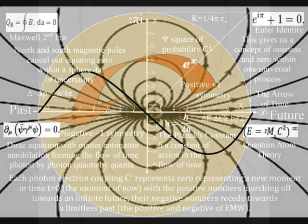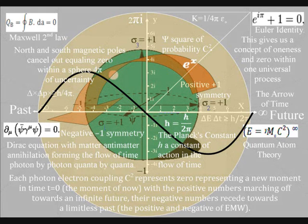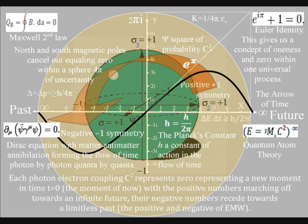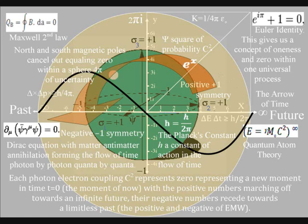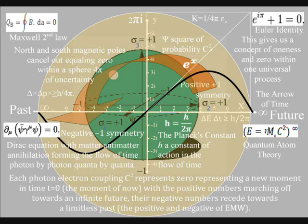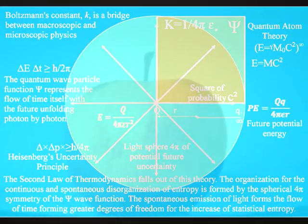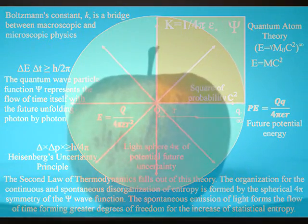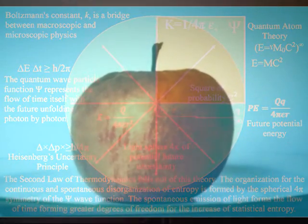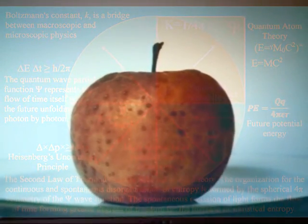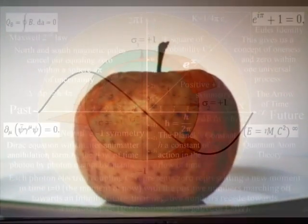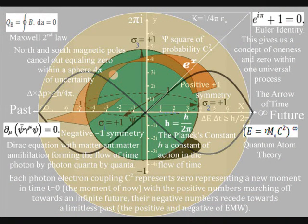On the lower left hand side of the diagram we have Dirac's equation, which also equals zero, representing zero time, with matter-antimatter annihilation forming a magnetic moment or dipole moment, with a future coming into existence photon by photon, quantum by quantum. This magnetic moment is formed when light waves interact with matter to form a photon-electron coupling, and the electron is the most spherical object in the universe. This spherical symmetry forms the low entropy that creates the possibility for the continuous increase in entropy — or disorganization — that we have in the second law of thermodynamics as time unfolds. As photon energy cascades down, it forms greater degrees of freedom for the increase in entropy, forming the uncertainty of everyday life.